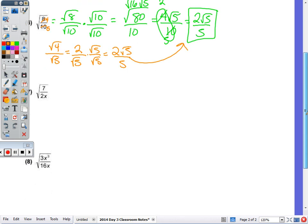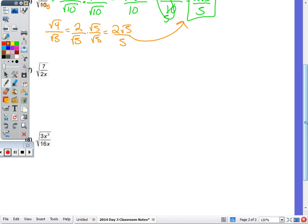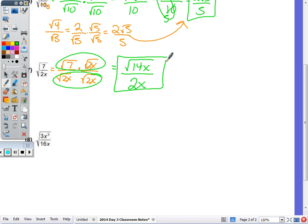Number 7, the square root of 7 over 2x. I cannot reduce 7 halves, so I'm going to break it up and then rationalize by multiplying by radical 2x over radical 2x. In the numerator, radical 7 times radical 2x is radical 14x. Radical 2x times radical 2x in the denominator is 2x. Since that cannot be simplified, we are done.